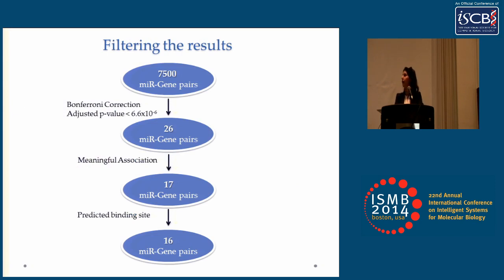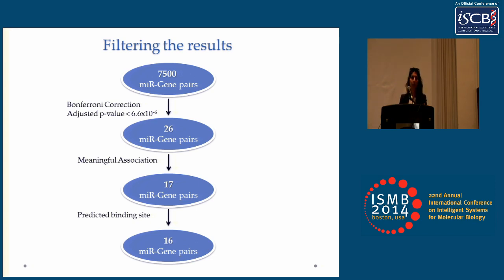Overall, we had 7,500 microRNA-gene pairs also associated with patients' prognosis. This kind of analysis required adjustment for multiple hypotheses, so we used Bonferroni correction on the entire set of p-values, which led us to include only 26 pairs.